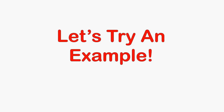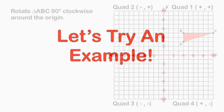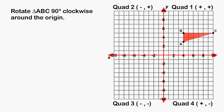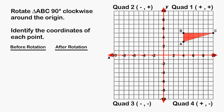Let's try an example. We are going to rotate triangle ABC 90 degrees clockwise around the origin. The first thing that we are going to do is write down the current coordinates of points A, B, and C. Point A is located at positive 4, positive 3. Point B is located at positive 4, positive 5. And point C is located at positive 10, positive 5.